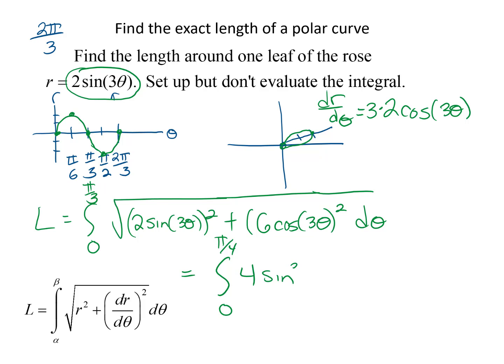Plus square the 6, so 36cos²(3θ), and that's all underneath a square root, and then dθ.